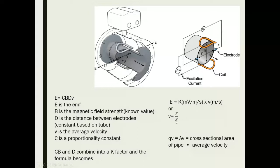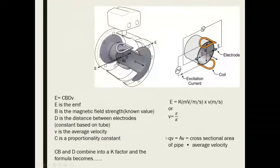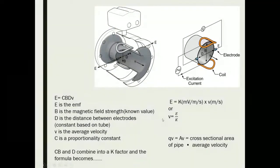It simplifies further: we can calculate the flow by knowing the cross-sectional area of the pipe and the average velocity of the medium flowing through that pipe. This represents the depth of the math we're looking at in terms of mag meters.